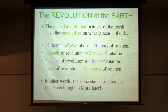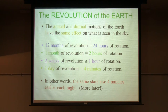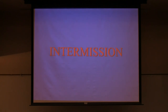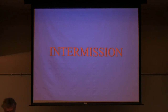This means the same stars rise four minutes earlier each night. If you time exactly when Antares rises tonight and time it again tomorrow night, it would be four minutes earlier because of the difference between the period of rotation and revolution as the earth goes around the sun — we gain four minutes a day. When we get back from the intermission, we'll cover solar and sidereal time, precession, and the Age of Aquarius. Thank you.